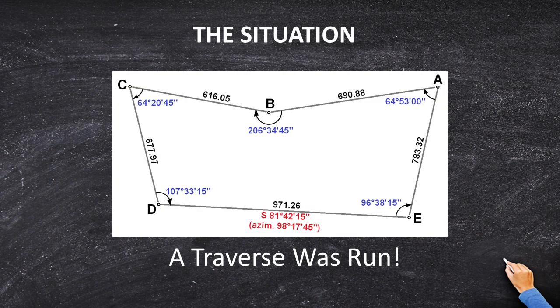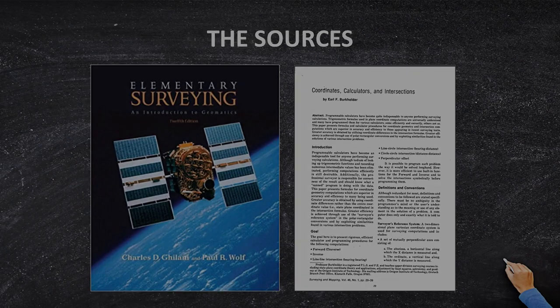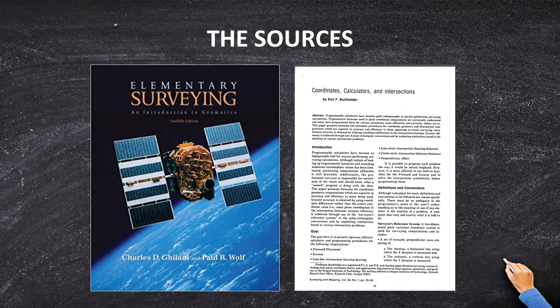The situation is this: you've got a three-sided traverse, and your job is to inverse between one point and another. In other words, you need to compute the azimuth and distance from point 2 to point 3. How do we do that? Well, we've got to know the formulas.